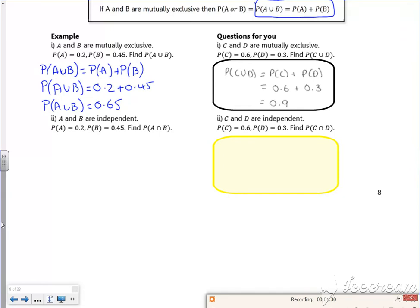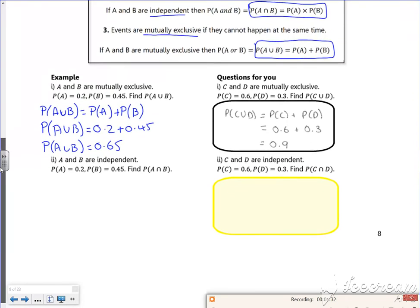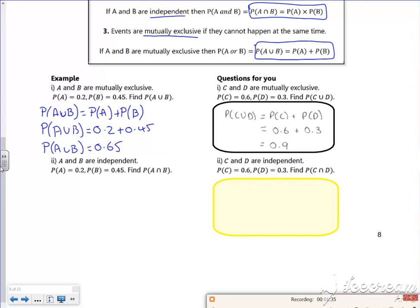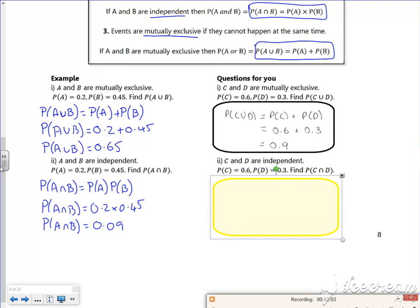Then there's one for independent. So if it's independent, we said that A and B is multiplying them together. So the probability of A and B is 0.2 times 0.45, which gives us 0.09. And there's one for you to have a go at, multiply them together, 0.18.